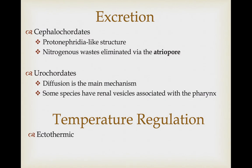Cephalochordates have a protonephridia-like structure, and nitrogenous wastes are eliminated through the atriopore, using excess water brought in from the gills to wash them away. In urochordates, diffusion is the main mechanism. Some species have a renal vesicle associated with the pharynx, but they have a large enough surface area that diffusion suffices for removing nitrogenous wastes. All these organisms are also ectothermic.